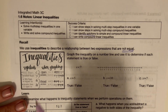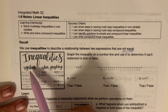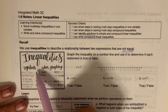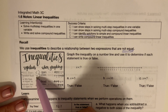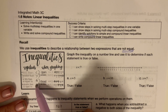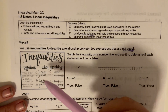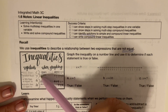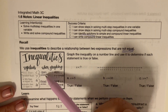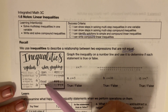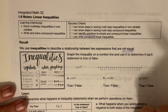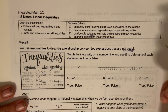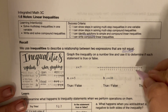I just want to remind you: the symbols — less than kind of looks like a sideways L, greater than, less than or equal to, greater than or equal to. If it doesn't have the line underneath, it's an open circle, and if it does, it's a closed circle.